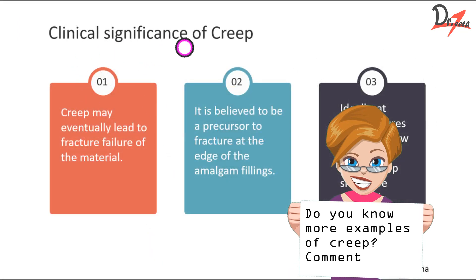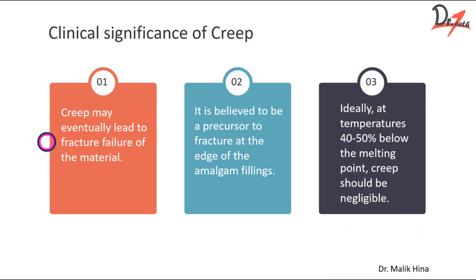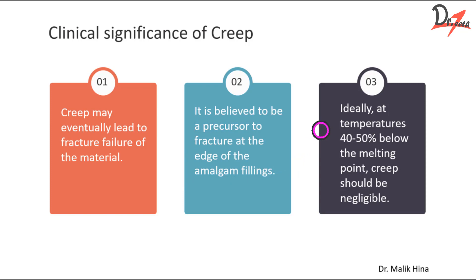The clinical significance of creep: creep may eventually lead to the fracture failure of the material. It is believed to be a precursor to fracture at the edge of the amalgam fillings. And ideally, at temperatures 40 to 50% below the melting point, creep should be negligible. Means, whatever the melting point of that metal is, 40 to 50% below that, the creep should be negligible.